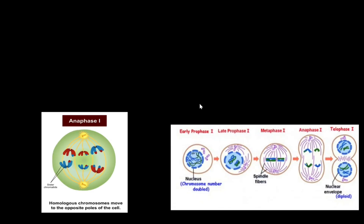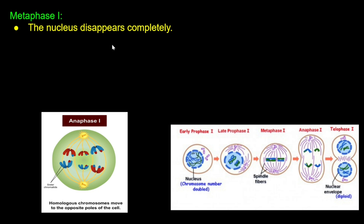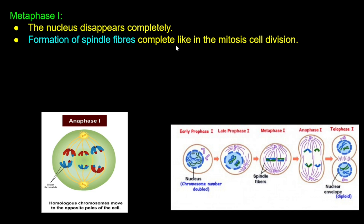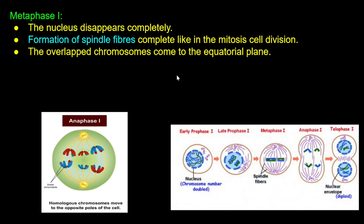Next is Metaphase first. The nucleus disappears completely. Spindle fiber formation is complete, like in mitosis cell division. The spindle fibers are visible as colored lines — purple and yellow color lines — indicating complete spindle fiber formation.